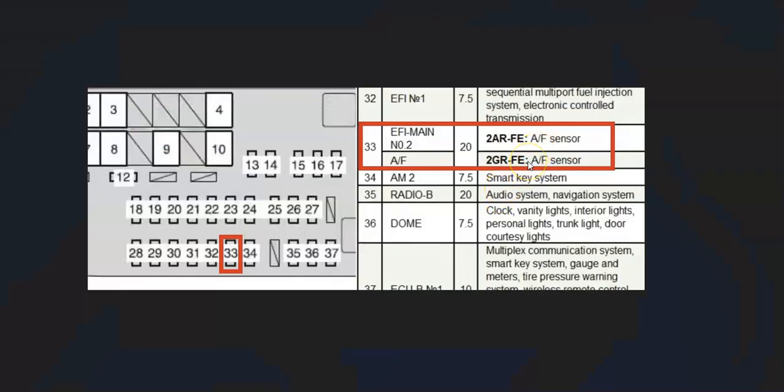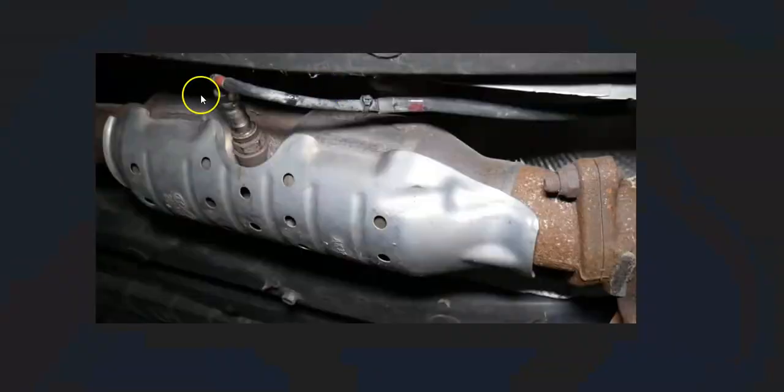These can be on a fuse and sometimes a relay. For example, here's a 2012 Toyota Camry with sensors labeled as AF sensors on fuse number 33—if that was blown, it would cause problems. Here's another example of a 2006 Toyota Tacoma with an AF heater fuse and relay. If those went bad, it could cause an issue.